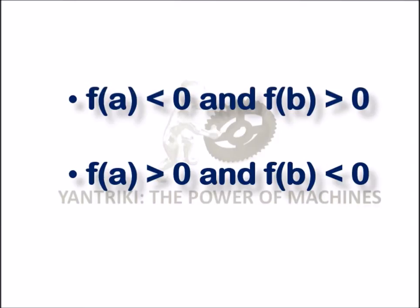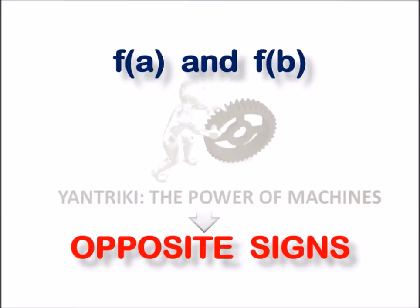f(a) < 0 and f(b) > 0, or f(a) > 0 and f(b) < 0. However, in any case, f(a) and f(b) should be of opposite signs.